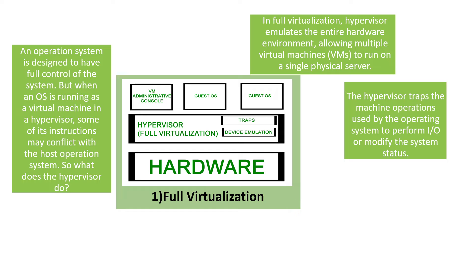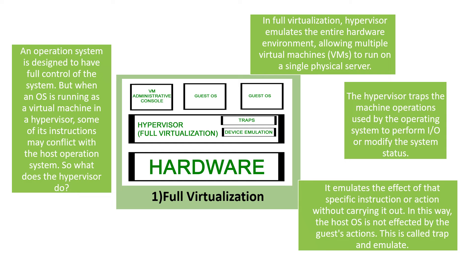We can see what this hypervisor trap and emulate means. An operating system is designed to have full control of the system. But when the OS is running as a virtual machine in the hypervisor, some of its instructions may conflict with the host operating system. The hypervisor emulates or mimics the effect of that specific instruction or action without actually carrying it out, so the host OS is not affected by the guest's action. This is called trap and emulate, and in full virtualization, the hypervisor performs this trap and emulate.